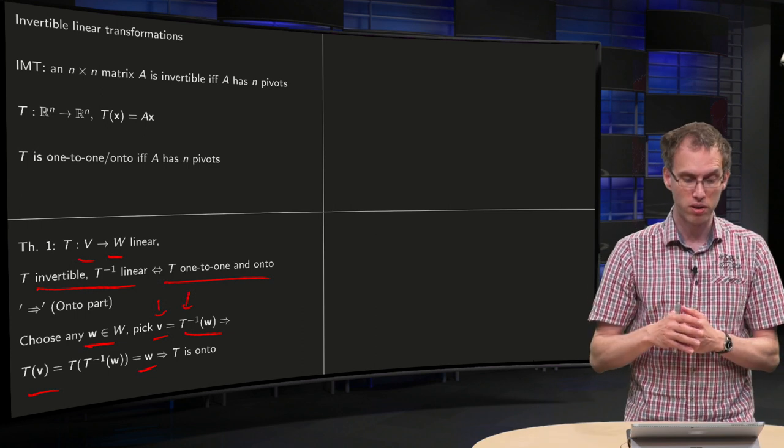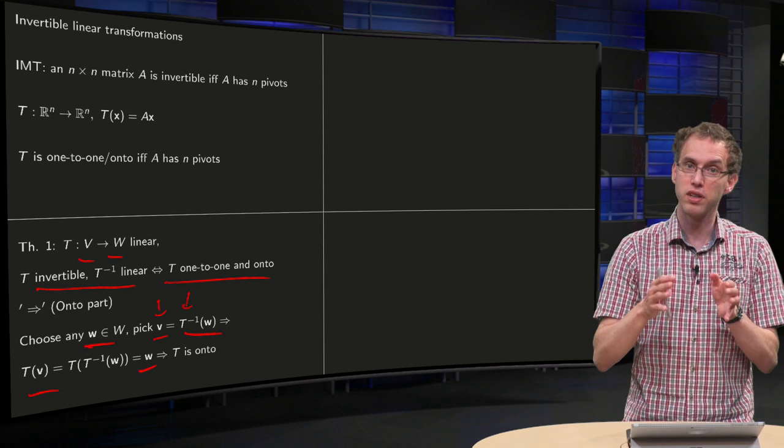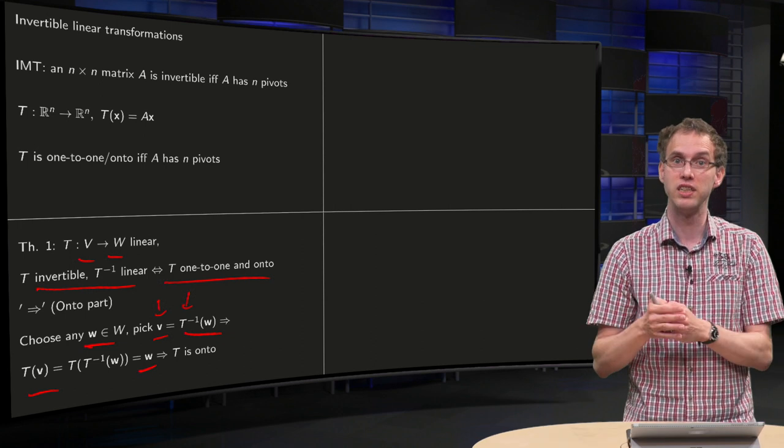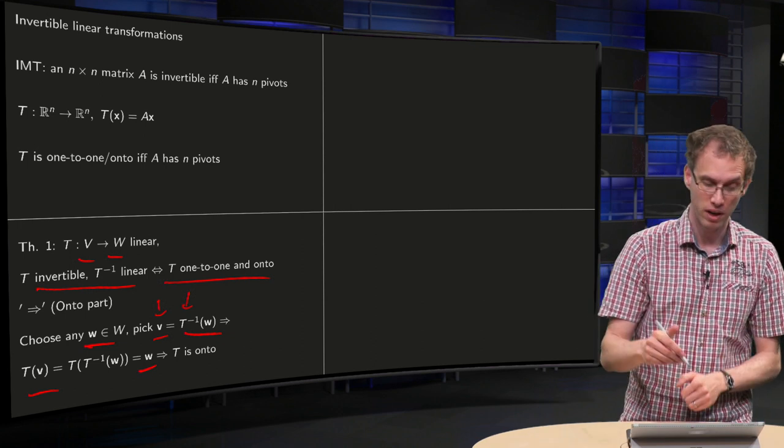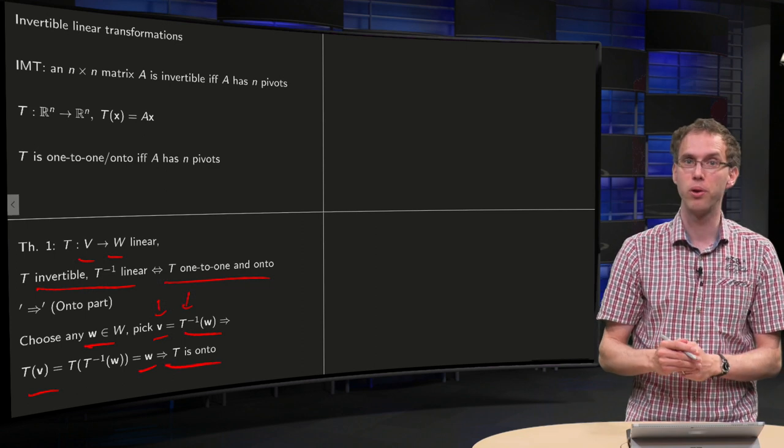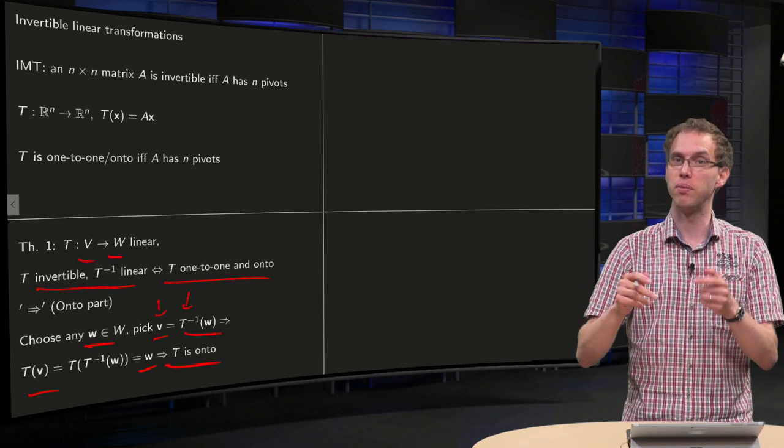So then you know that your v, the T of your v equals w, so you can reach any w in your codomain, so your T is onto, it's basically given by your inverse.